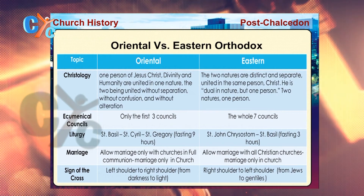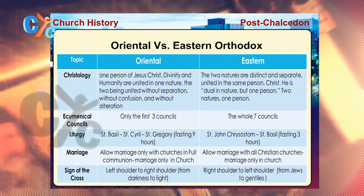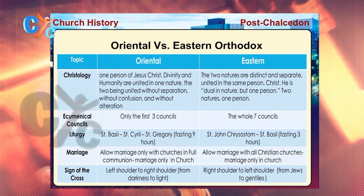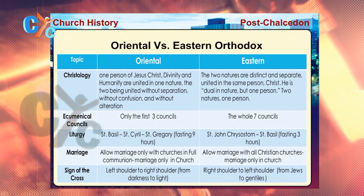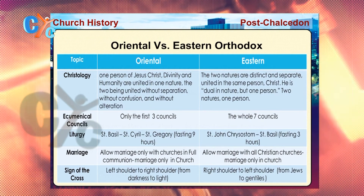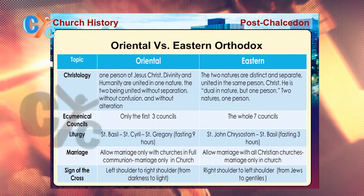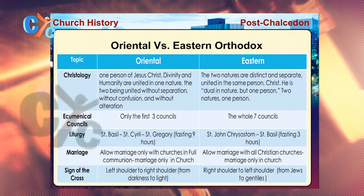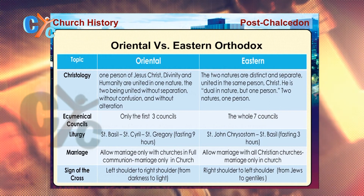Concerning the ecumenical councils, our church and the Oriental Orthodox churches believe in and confirm only three councils — the first three — while the Eastern Orthodox team confirms and accepts seven ecumenical councils.